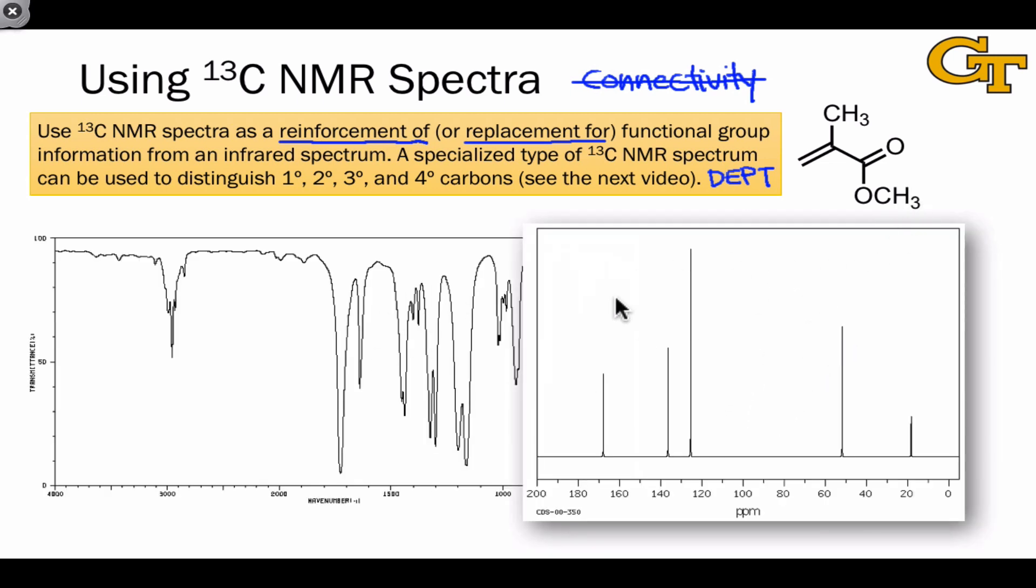Here are the infrared spectra and the carbon-13 NMR spectra for the molecules shown here, which is methyl methacrylate. The IR spectrum indicates clearly the presence of a carbonyl group in this molecule. And we see a downfield peak that indicates the presence of a carbonyl group as well. And in fact, both of these, with a little bit more care, we can identify with an ester functional group.